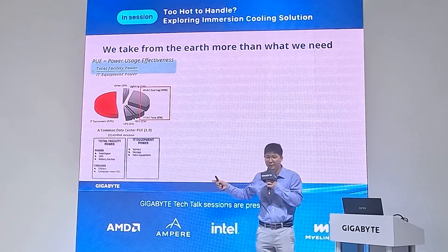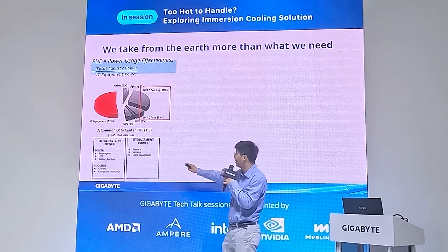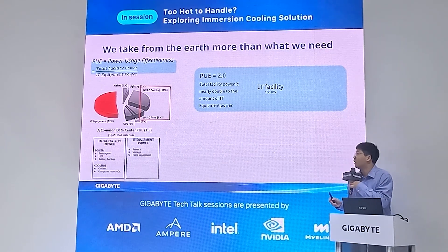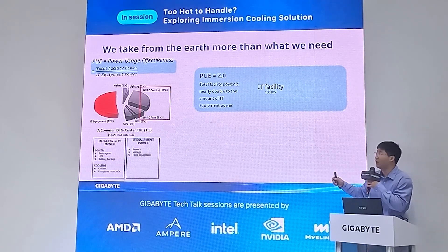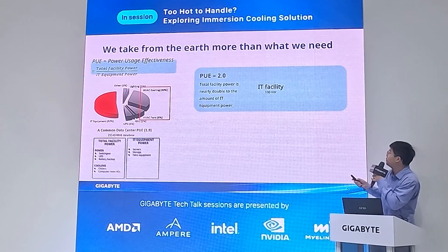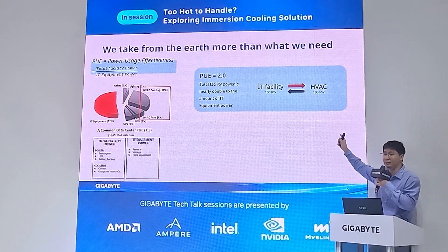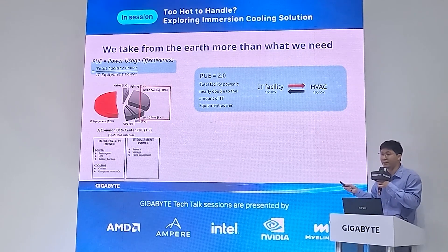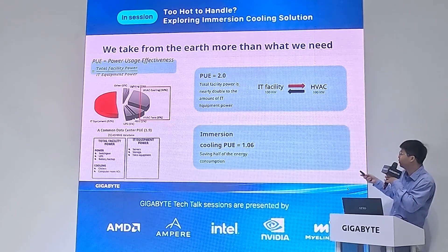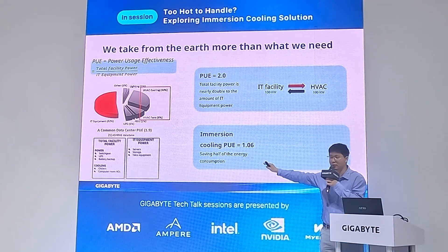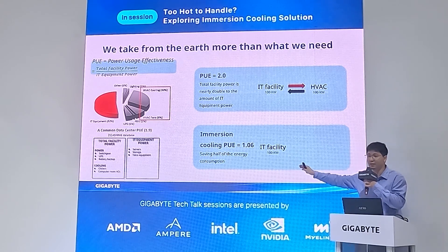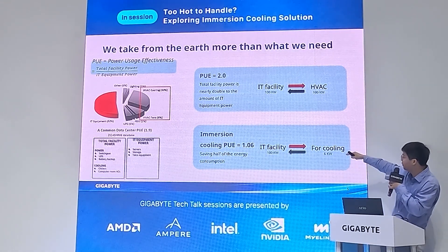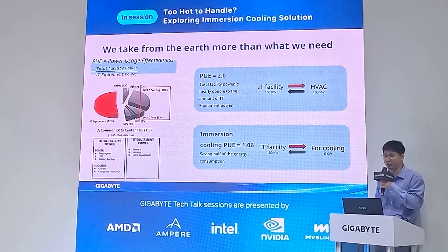For a common air cooling data center, PUE is 1.9 — from the HR database. If we use PUE 2.0 as an example, we generate 100 kilowatts for the server as IT facility, but we still need another 100 kilowatts for system cooling to offset the heat we produce — effectively doubling our draw on the earth. Whereas with immersion cooling, PUE is 1.06. We still generate 100 kilowatts for the server, but only need 6 kilowatts for system cooling — a huge energy saving.